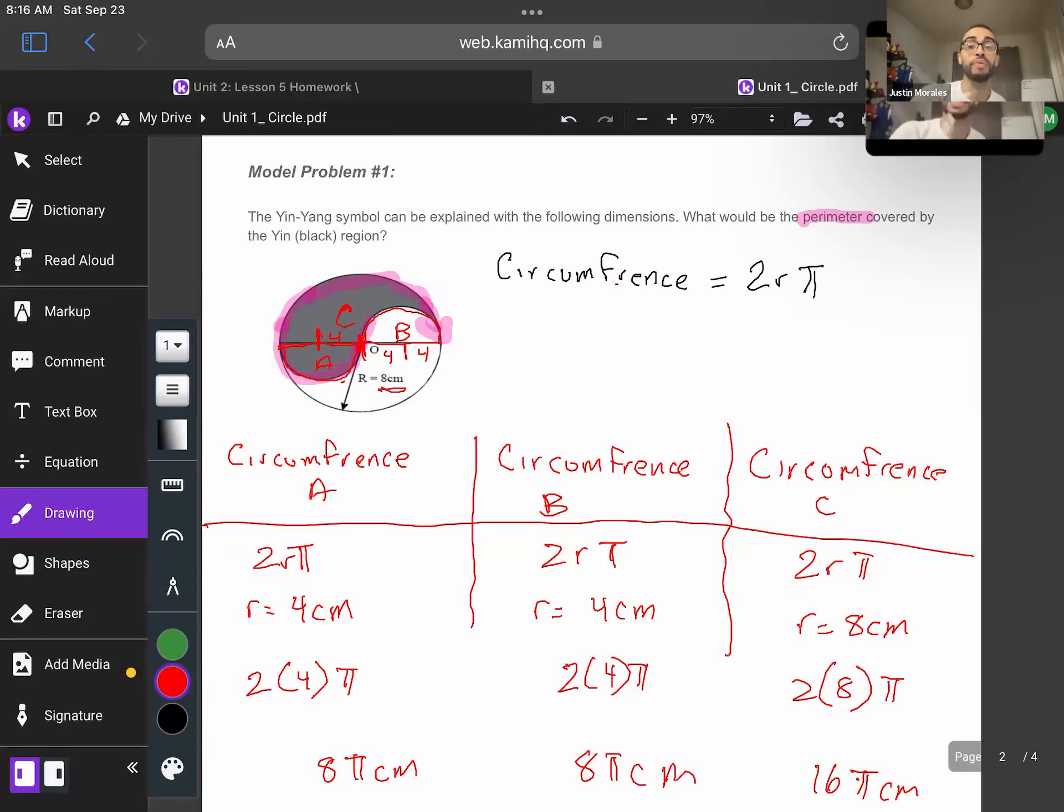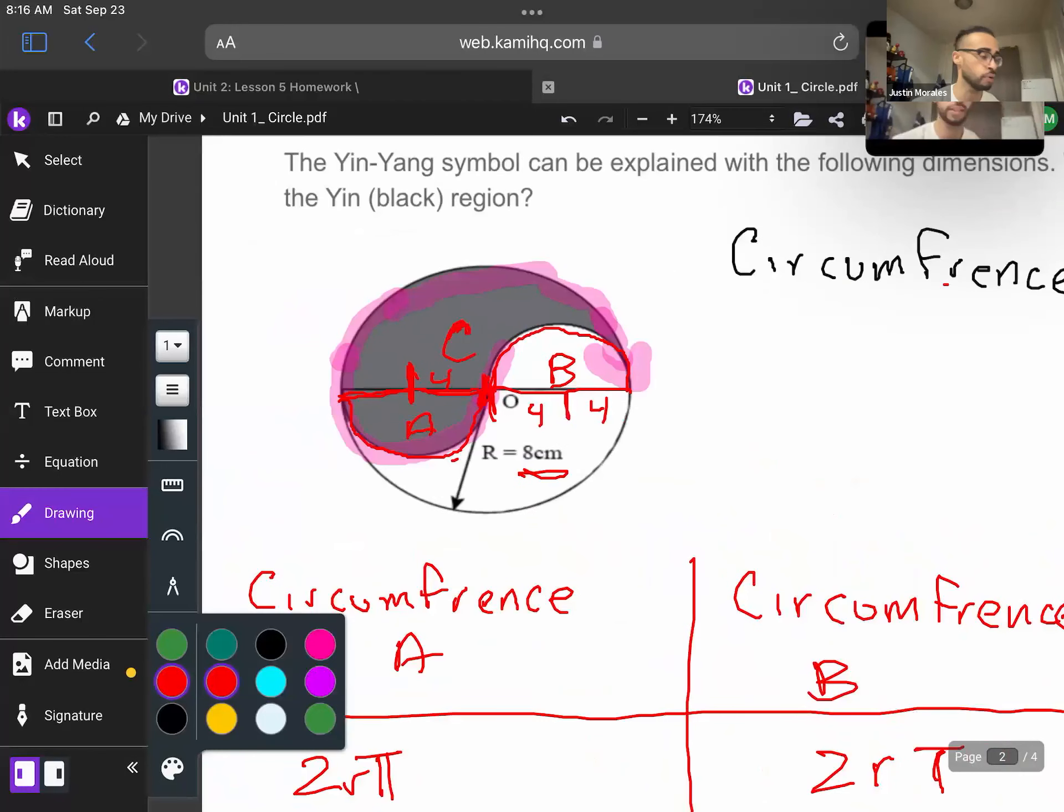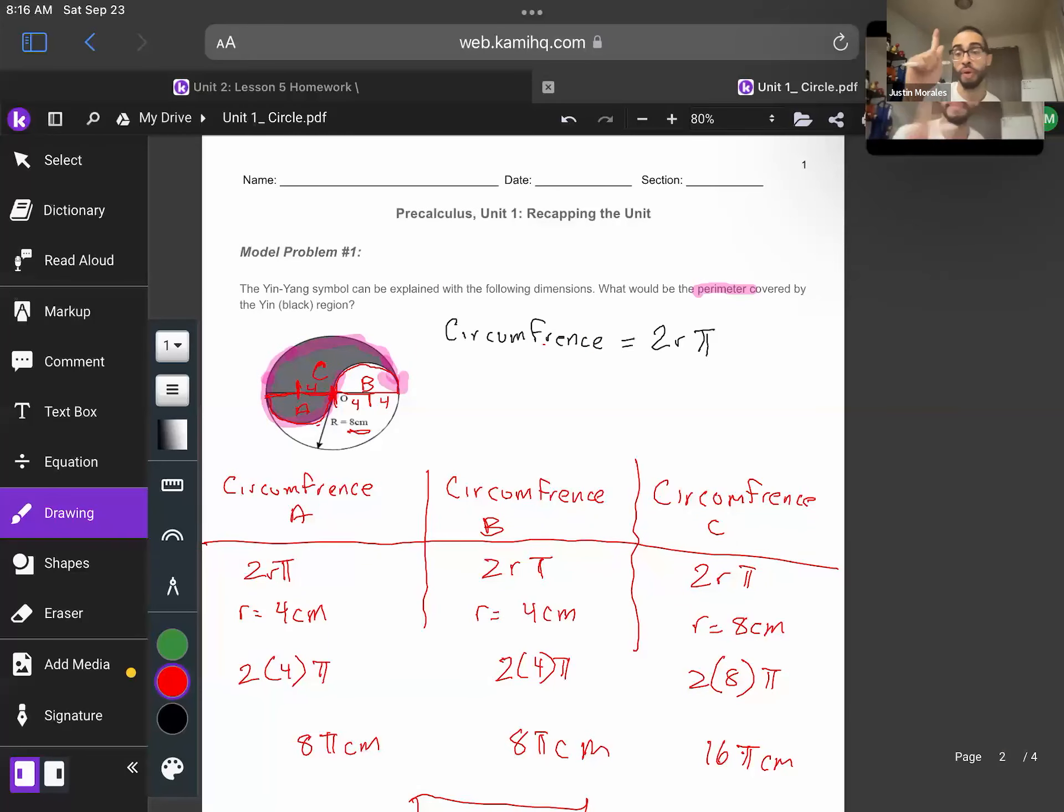However, I realized that the circumference formula tells us the circumference of the entire circle. So we carefully examined our yin-yang symbol and noticed that the semicircles within it will help us. And we utilized the semicircles within it and used the circumference of those semicircles. We were able to figure out the answer of the greater problem. So that was model problem number one.